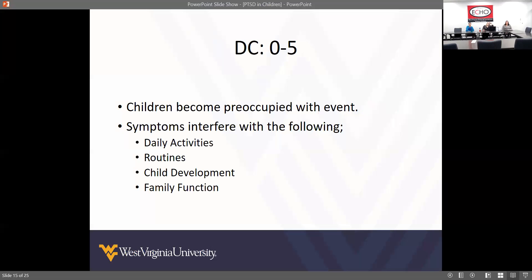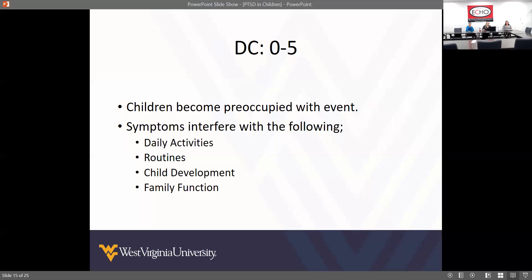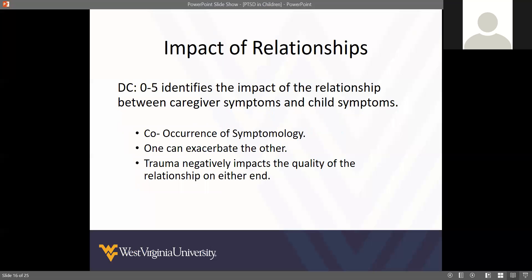The DC Zero to Five looks at children becoming preoccupied with the event, play reenactments with trauma, how children reenact over and over again through play, repeated nightmares, specific nightmares, night terrors, hot flashes within the night. It addresses how symptoms can interfere with daily activities and routines. You want to look at the child's development and family function, because family interactions and relationships are a big part — especially when looking at kids under six and co-occurring symptomology.